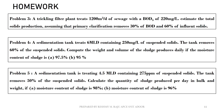Problem 2: A trickling filter plant treats 1200 m³ per day of sewage with a BOD₅ of 20 mg per litre. Estimate the total solid production assuming that primary clarification removes 30% of BOD and 60% of influent solids. Problem 3: A sedimentation tank treats 6 MLD containing 250 mg per litre of suspended solids. The tank removes 60% of suspended solids. Compute the weight and volume of sludge produced daily if the moisture content is (A) 97.5% and (B) 95%.